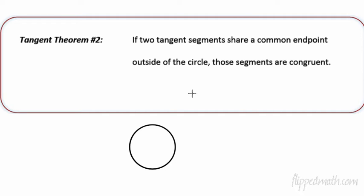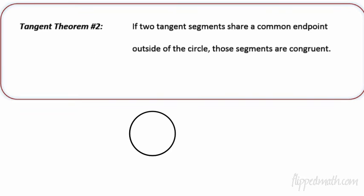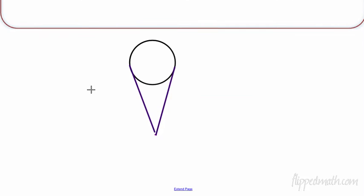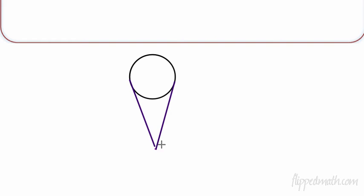Tangent theorem number two: if two tangent segments share a common end point outside the circle, those segments are congruent. Remember you have to pause the video and write this down. What does this look like? Well if you have a common end point and two tangents, here's the common end point. We have two tangent lines to a circle. Do these look congruent? They kind of do look congruent here. There's congruent, that's congruent. That's what the theorem says.